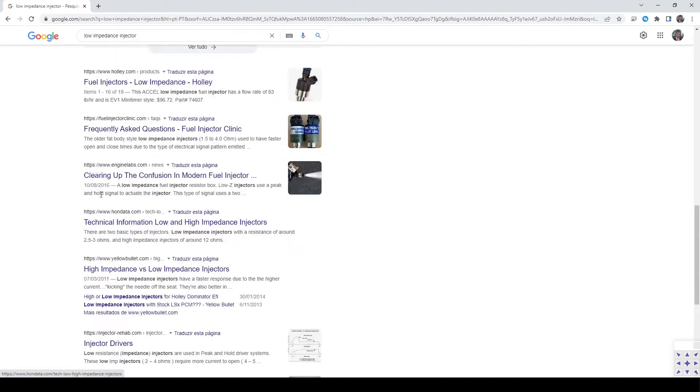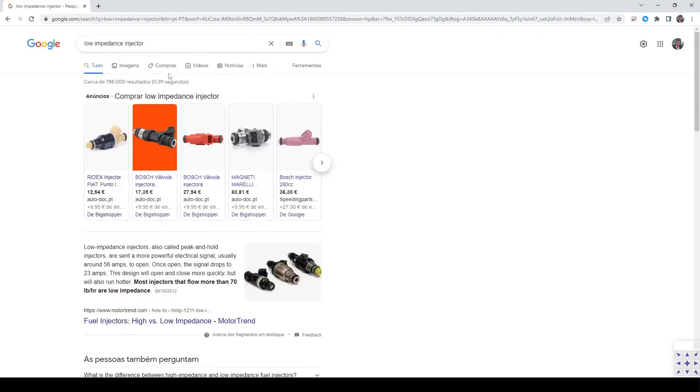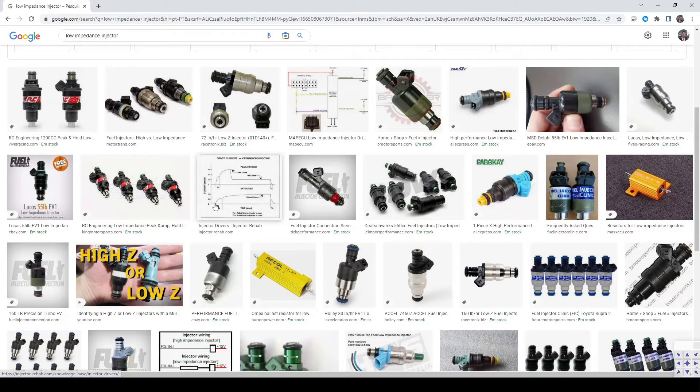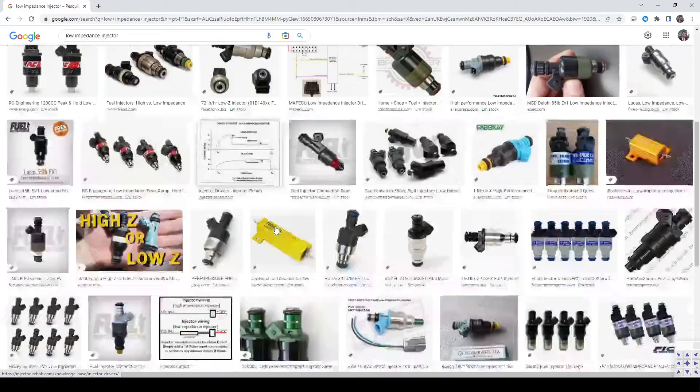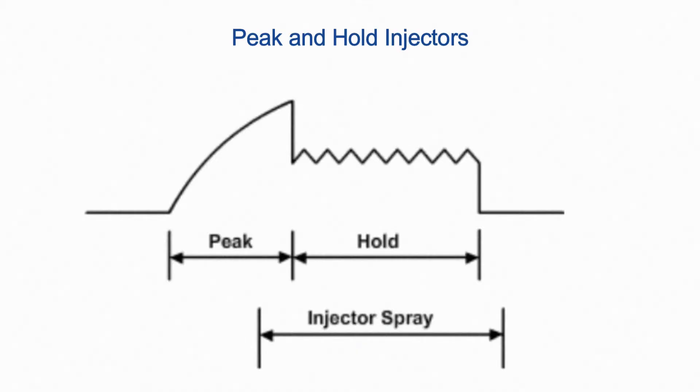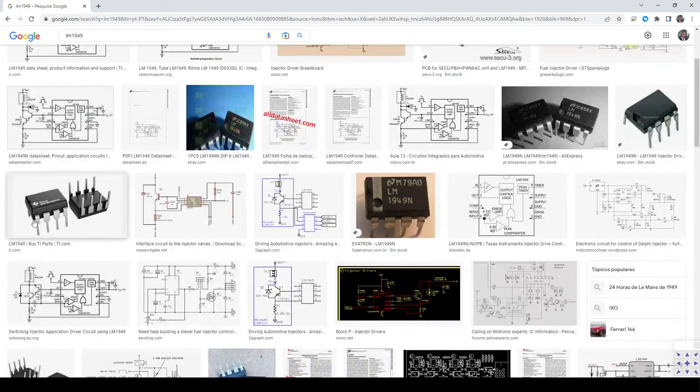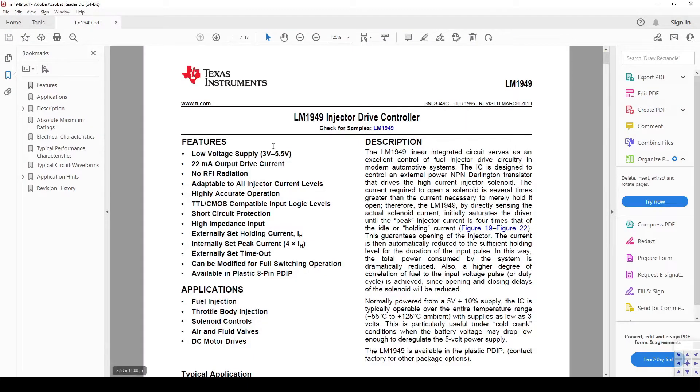The idea under these is the following. These low impedance injectors require a huge amount of current to open rapidly due to their sizes. However, if they operate always under these currents, they will have a short lifetime. And since a lower current is required to keep them open, the peak and hold driver outputs a current signal like this, in which the current has a peak value to slam open the injector and then hold it in a more reduced value to prevent the injector from burning.